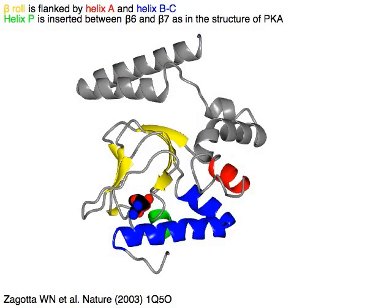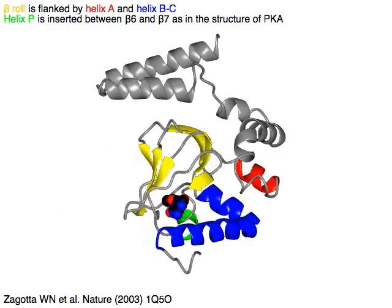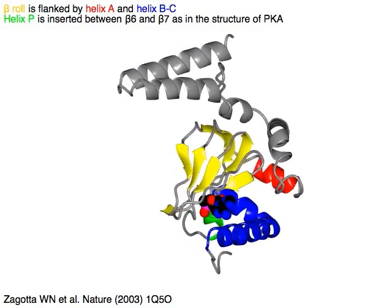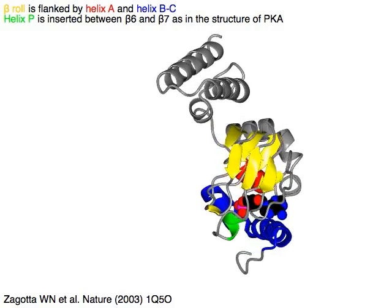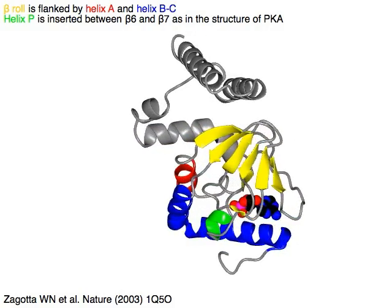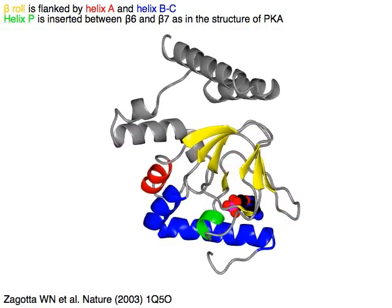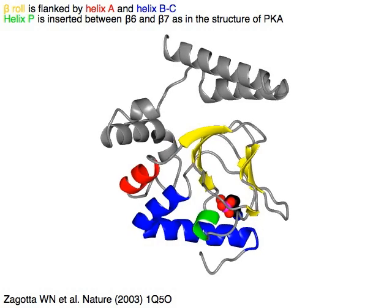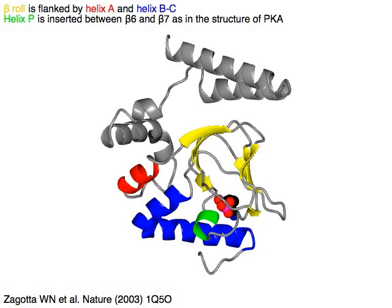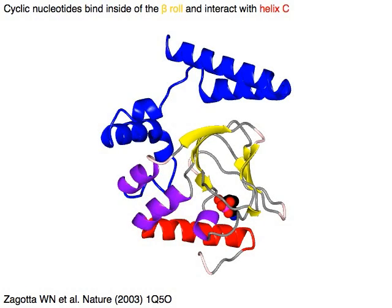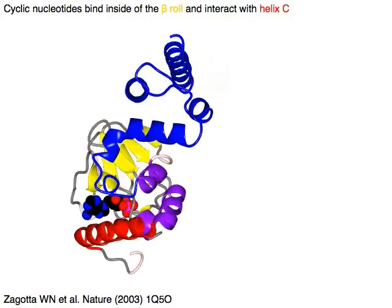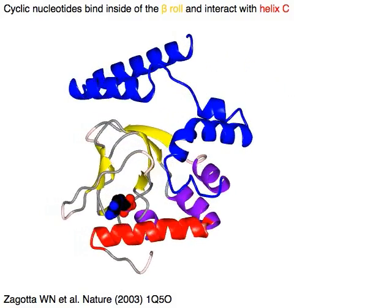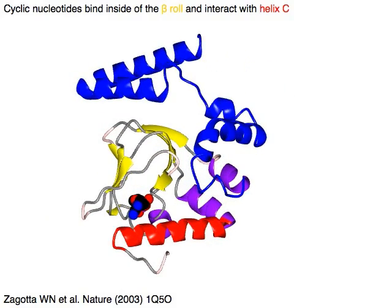The beta-roll in yellow is flanked by helix A in red and helices B and C in blue. Helix P in green is inserted between beta-6 and beta-7, as in the structure of PKA. Cyclic nucleotides bind inside the beta-roll in yellow and interact with helix C in red.